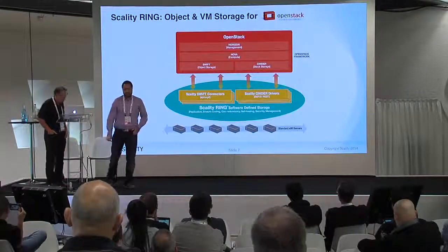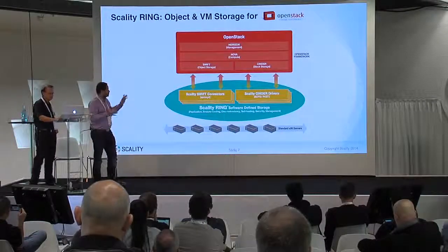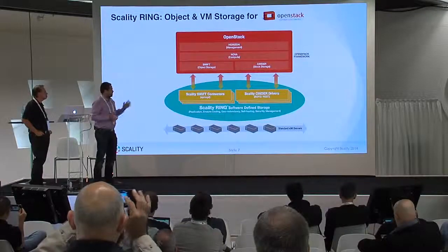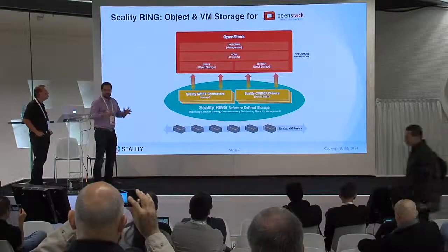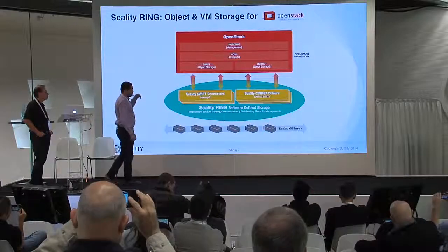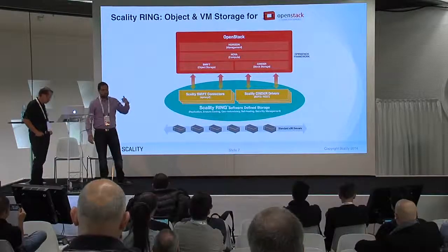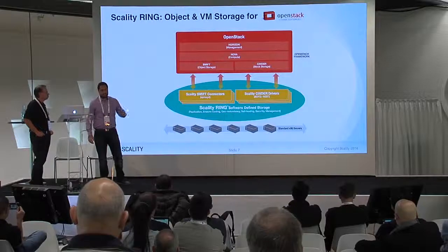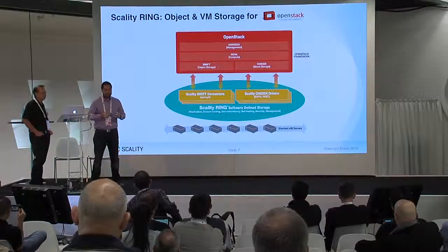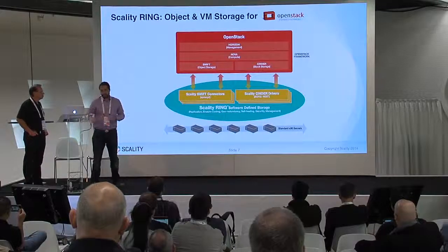I'm going to walk you through some of our integration points with OpenStack. There are two main pieces: Swift as the object storage, and Cinder for block VM-type storage. You install a standard Swift deployment — it can be Red Hat, Ubuntu, Mirantis, or Innovance, it doesn't really matter — and then you plug in the Scality connectors. You can mix and match with other types of connectors in your environment.